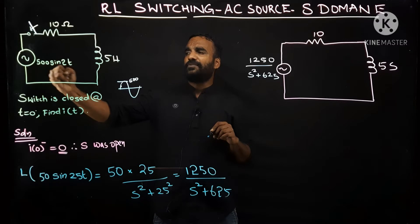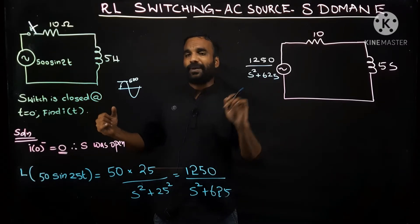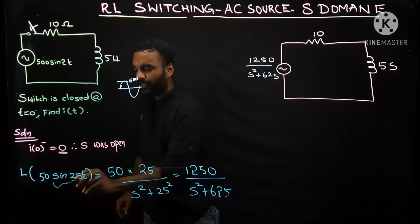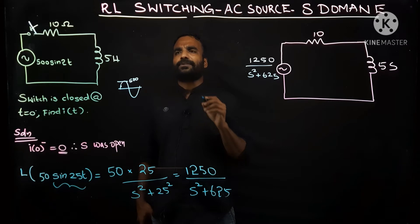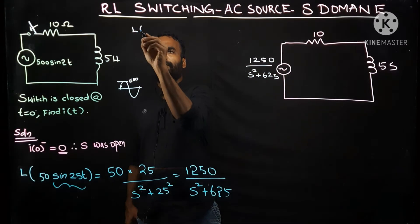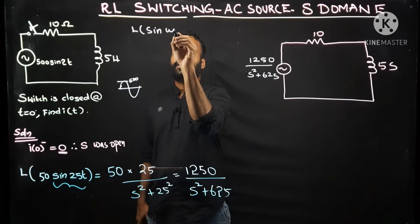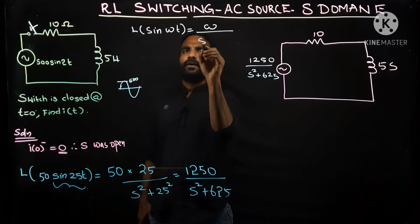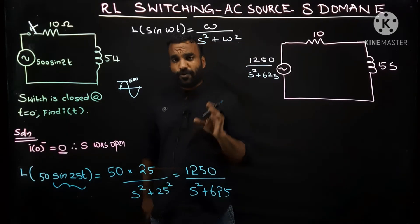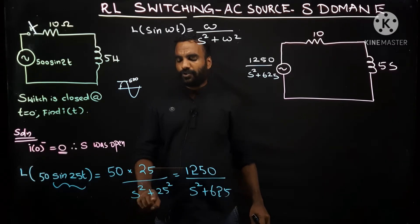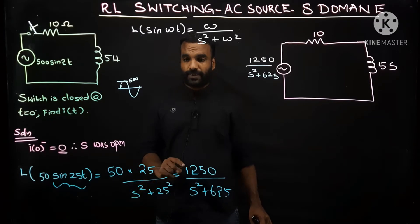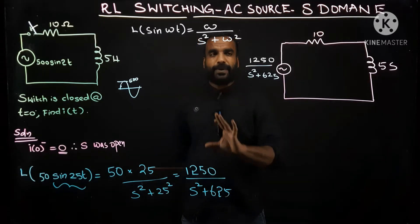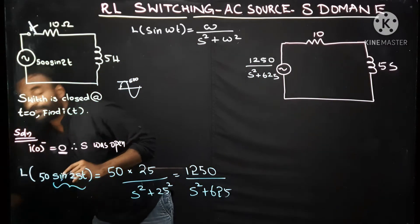The next issue is converting 500 sin(2t) to the S-domain. Taking the Laplace transform: L{500 sin(2t)} = 500 × L{sin(ωt)}. The Laplace of sin(ωt) = ω / (s² + ω²). Here ω = 2, so this gives 500 × 2 / (s² + 4) = 1000 / (s² + 4). Initial calculations are over — no initial current was in the inductor, so no initial voltage source appears in series with the inductor in S-domain.